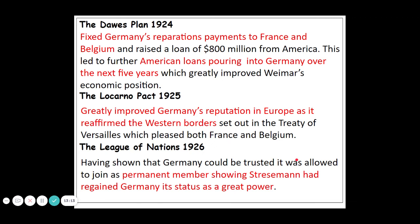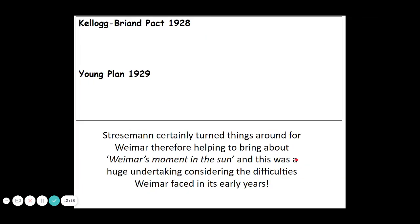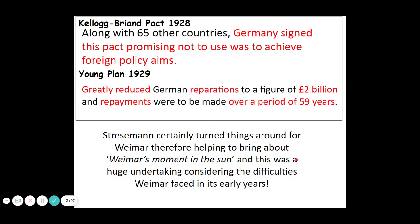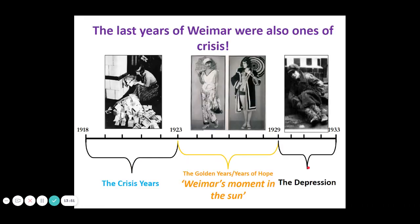We see this again in the Kellogg-Briand Pact — Germany's signing of a pact promising not to use war to achieve foreign policy aims. And then the Young Plan of 1929 reduces German reparation payments from £6.6 billion to around £2 billion, spread over a 59-year period. So Stresemann certainly turned things around for the Weimar Republic, helping to bring about its moment in the sun. This was a huge undertaking considering the difficulties the Weimar Republic had faced in its early years.